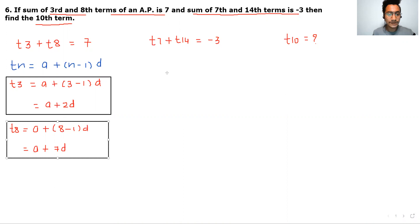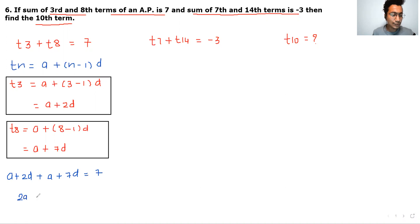Adding T3 and T8: A plus 2D plus A plus 7D equals 7, so 2A plus 9D equals 7. This is the first equation.